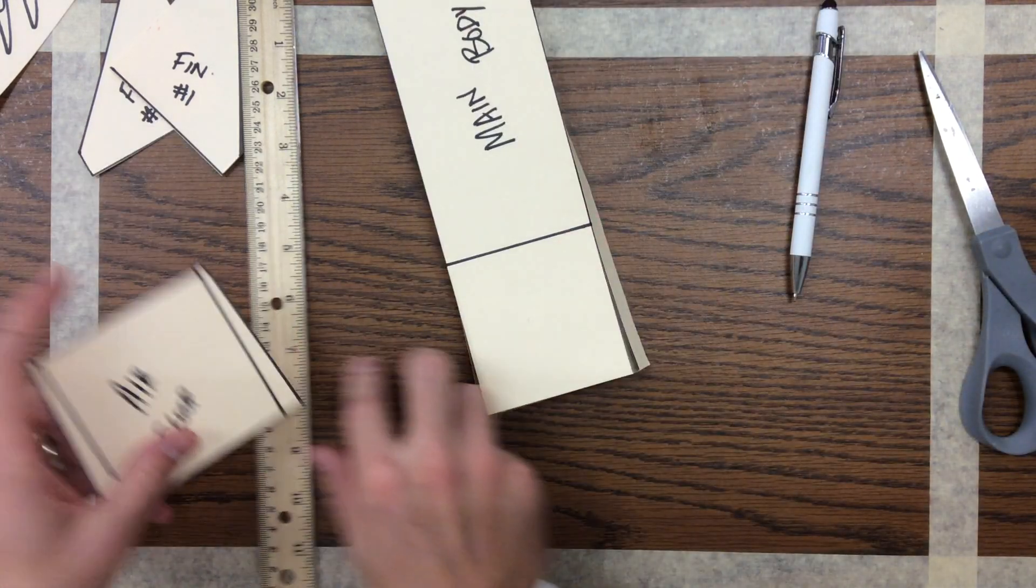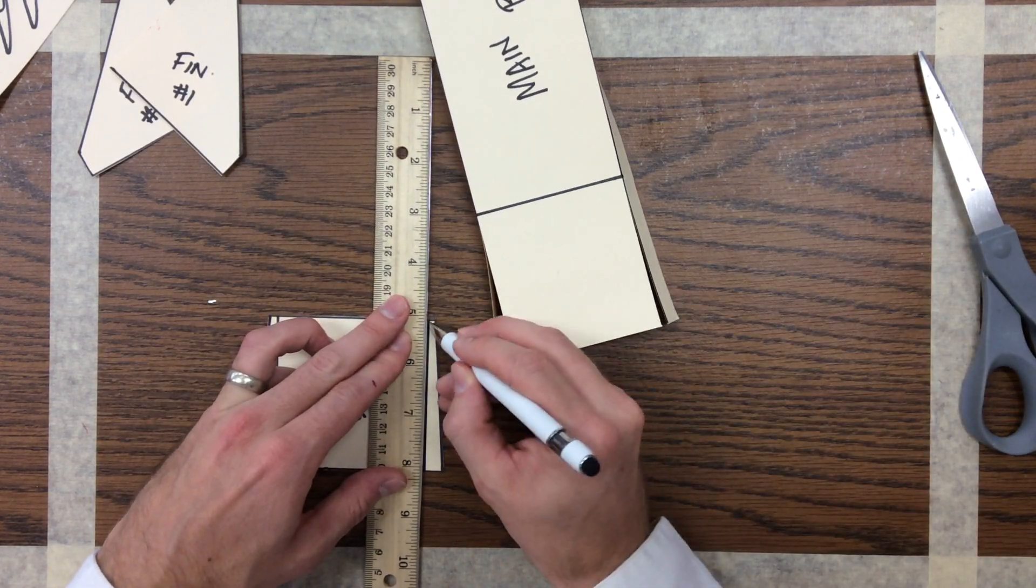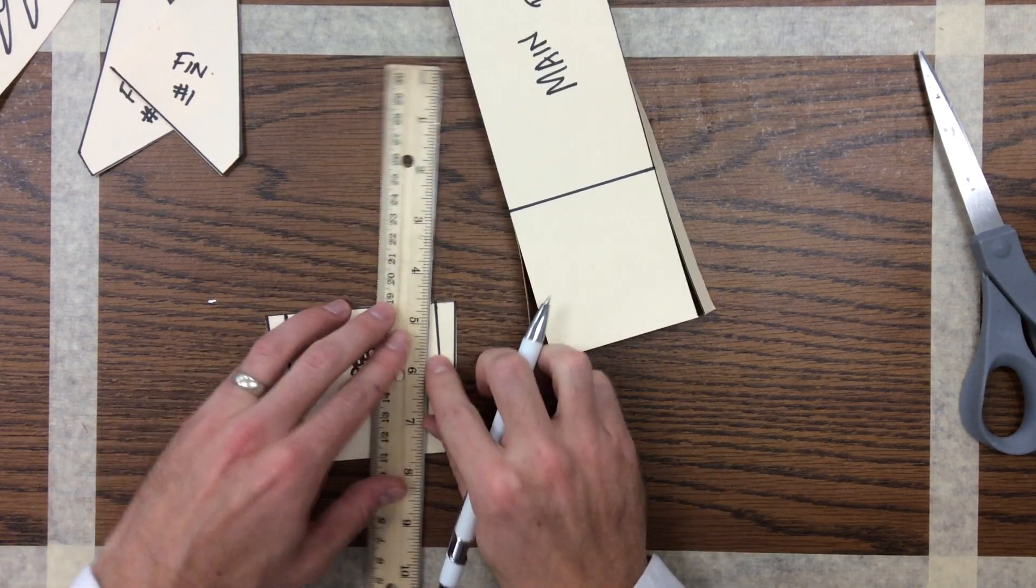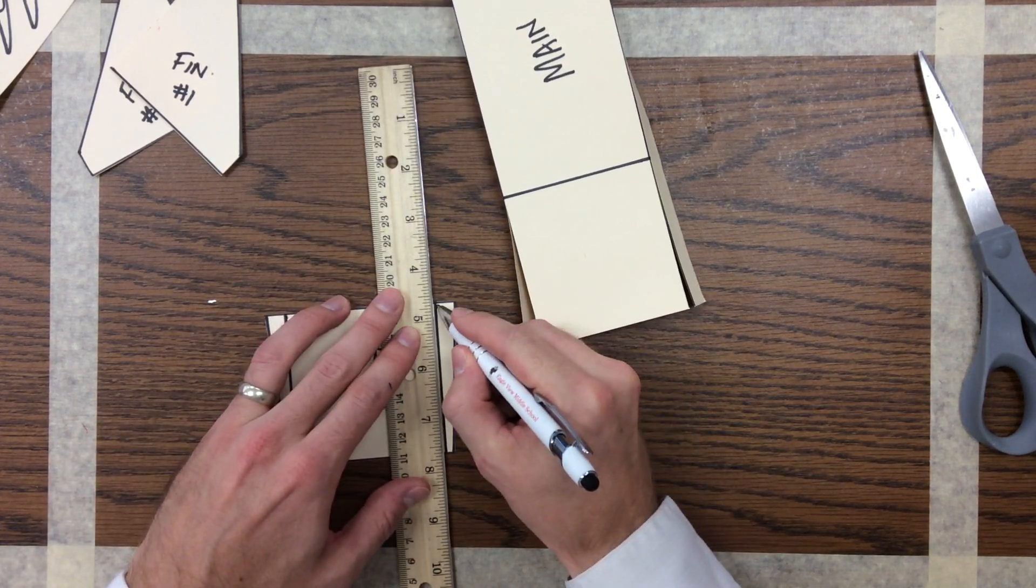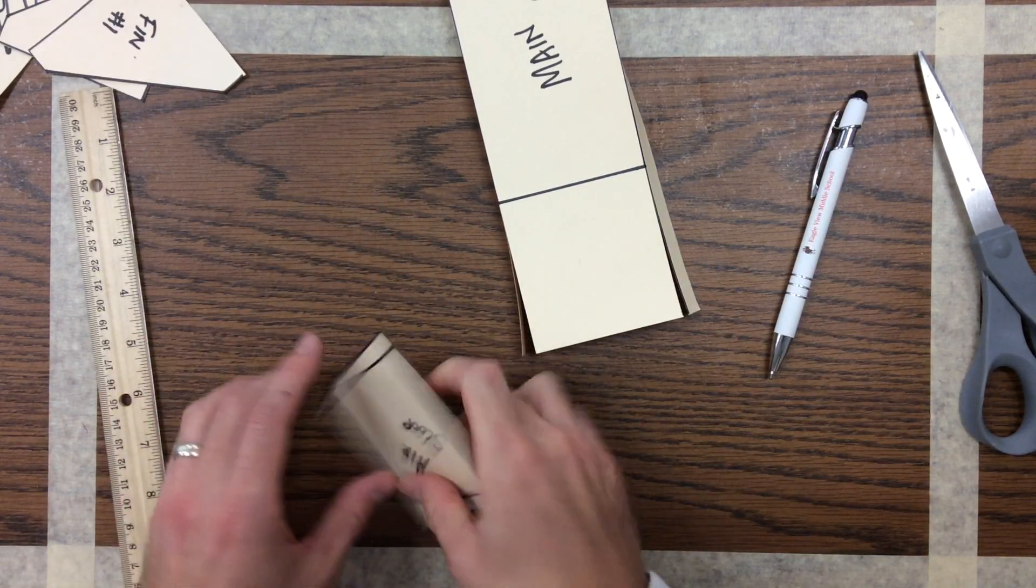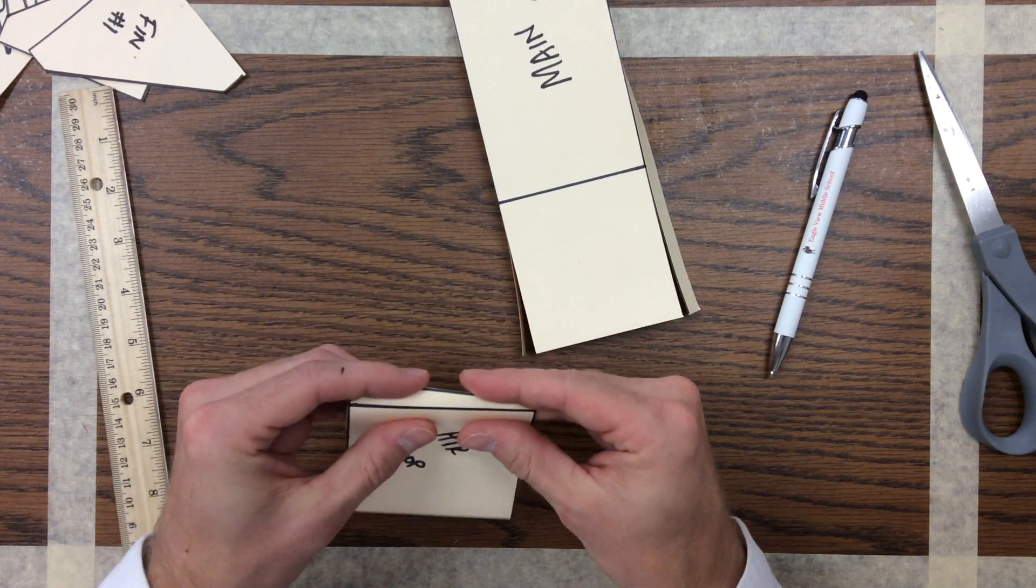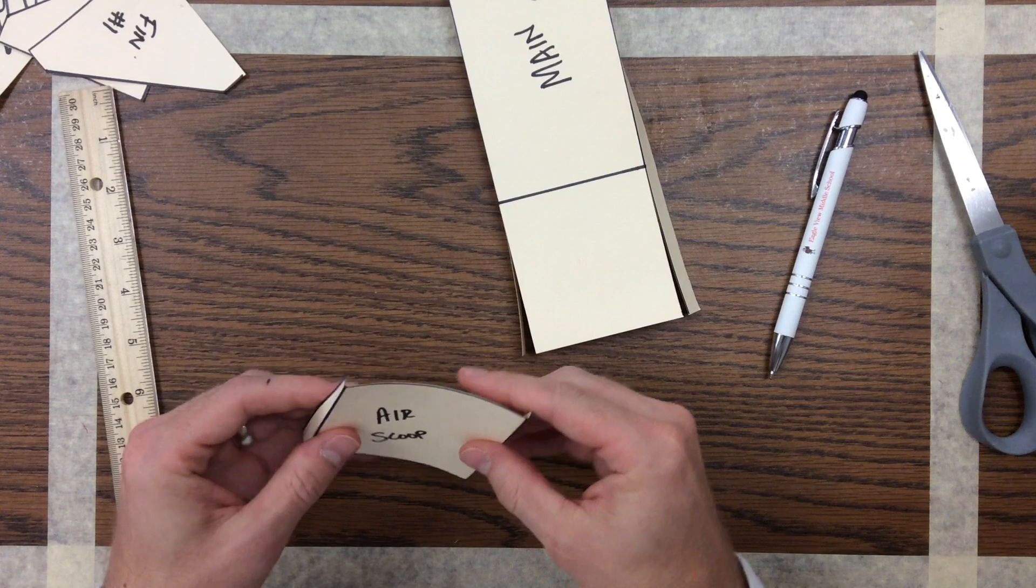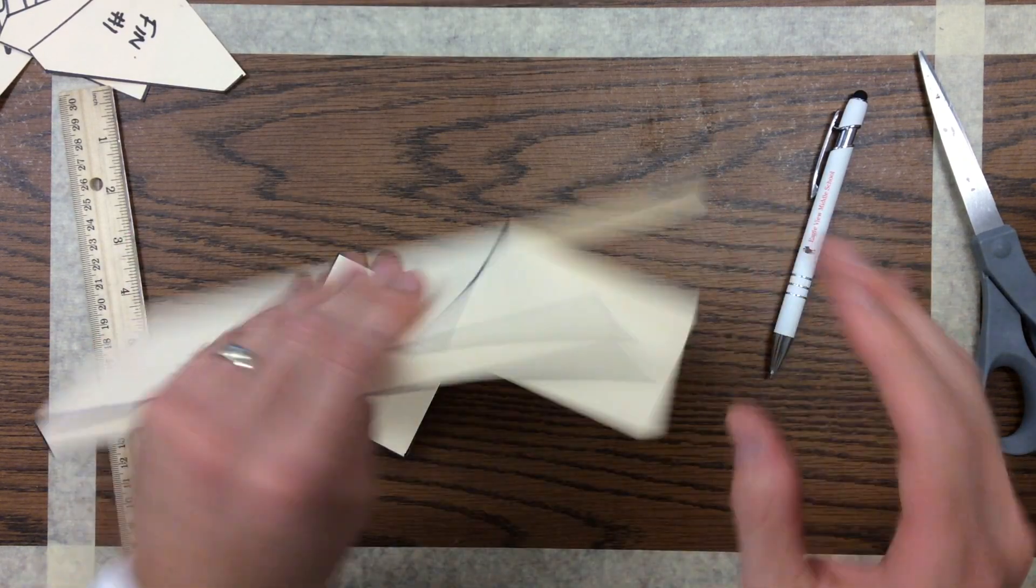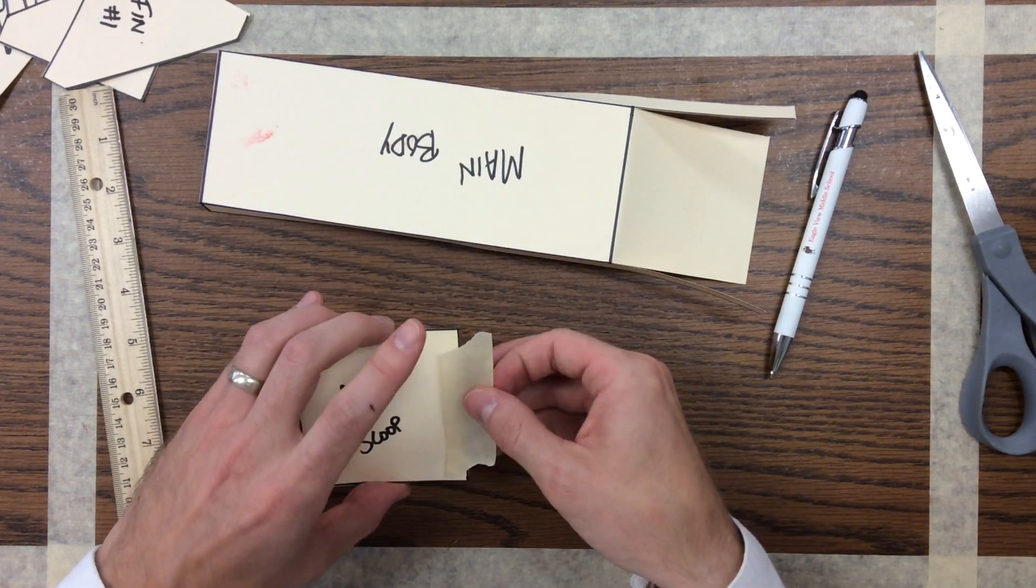Perfect. I'm going to do the same thing with the air scoop, same method. One side down, one side back. I can fold that right there. Get a nice 90 degree fold and now it comes time to actually assemble it. I'm going to fold this back slightly to get that ready for one of the steps coming up. But the first thing I'm going to do is going to secure my air scoop.